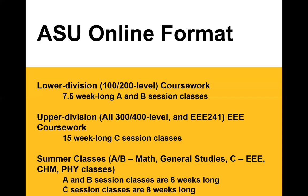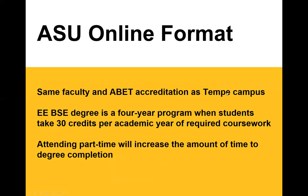Summer is viewed as a catch-up semester — great if you're missing a prerequisite. Many online students go full time in summer. The ASU Online format uses the same faculty and accreditation as Tempe counterparts. It is a four-year program when taking a minimum of 30 credits per academic year in fall and spring. Attending part time, as most online working-adult students do, will increase time to degree completion — typically six to seven years part time.